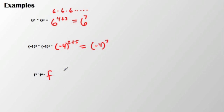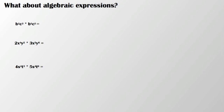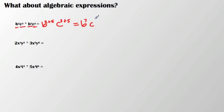That's okay with a variable as well — the product of powers property still applies, and I'm left with f to the ninth. This also works with algebraic expressions. I'm going to take these values individually. I have b squared times c cubed, times b to the fifth times c to the fifth. Starting with b squared times b to the fifth, I get b to the 2 plus 5, and c to the 3 plus 5. That gives me b to the seventh, c to the eighth.